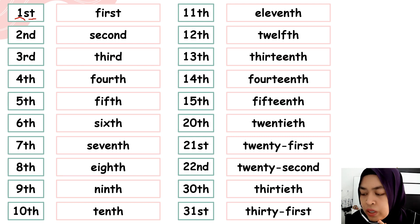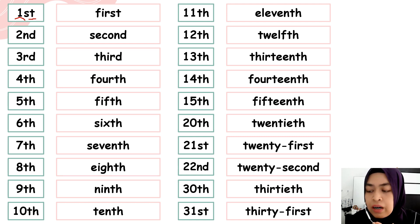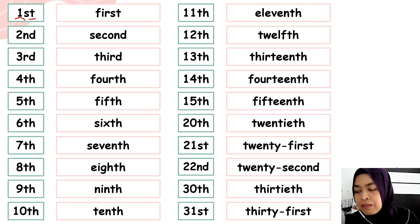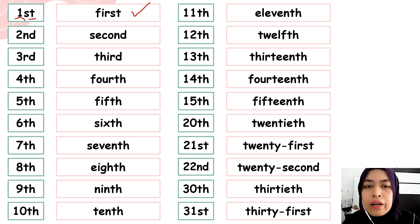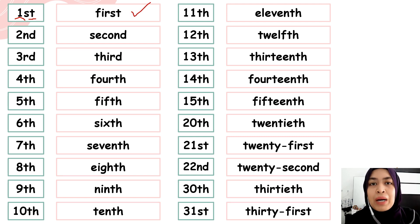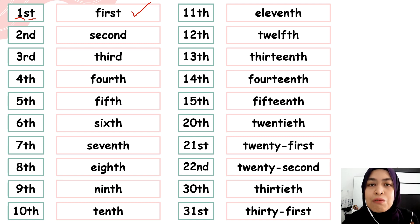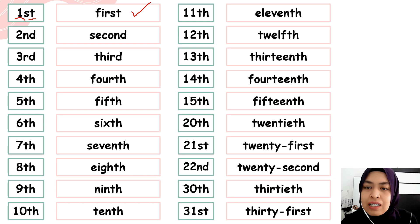So what are ordinal numbers? Ordinal numbers are numbers that define the position of something. For example, Ali won first place — Ali menang tempat pertama. So 'first' refers to the position.